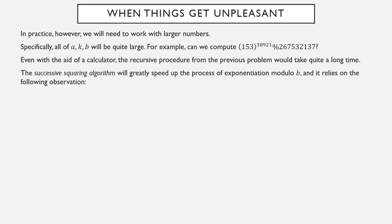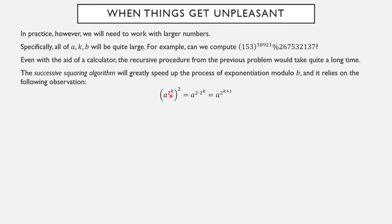The successive squaring algorithm we're going to introduce now will greatly speed up the process of exponentiation modulo b. It relies on the following observation: suppose I have already raised a number to a power, and that power is a power of 2 — so I have a to the 2 to the k. If I square that number, squaring is exponentiating to the second power, so I get one power to another power and can multiply those exponents. But 2 times 2 to the k is 2 to the k plus 1. So if you have computed a to a power of 2 and you square it, what you've really done is computed a to the next power of 2.